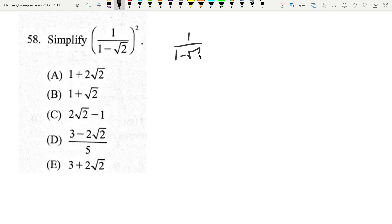It'll be a little bit easier to do it now than after I square it, so I'm going to multiply it by 1 plus root 2 on top and bottom, and that is being squared still.